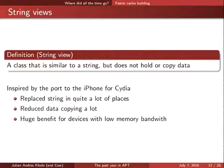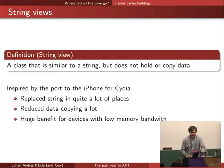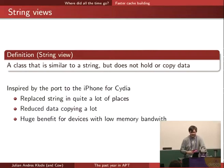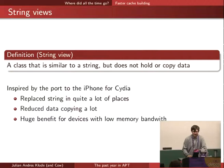Now for more internal performance things. The first was string views. When we are reading a packages file, we want to get the data into our cache file. Previously we read it into a buffer, created a string out of the buffer, maybe trimmed the string, and that copied a lot of data. In 1.2, we introduced string views, which are classes similar to strings but instead of holding the data themselves, they only reference a block of memory and have a length. They are originally from the C++17 standard, and we have our own limited implementation so we don't depend on C++17.